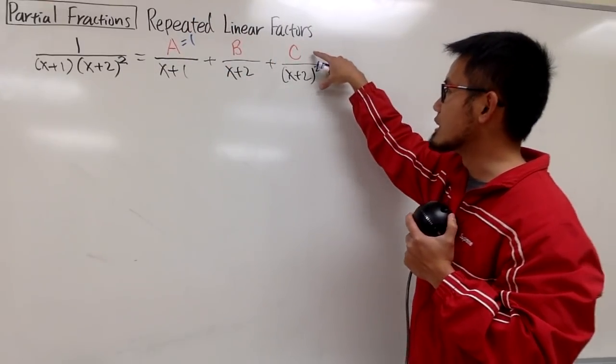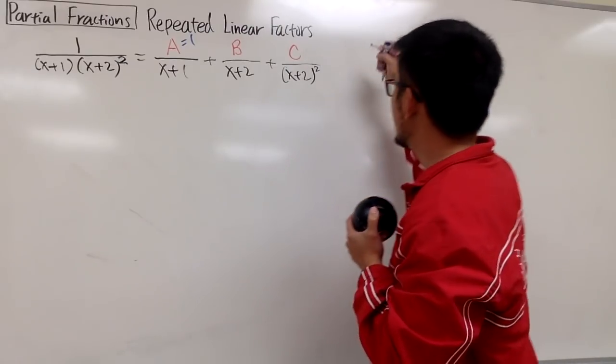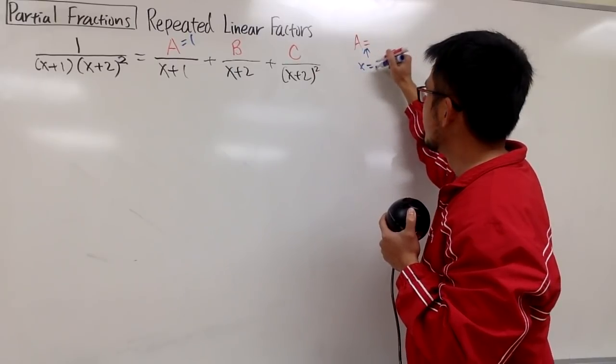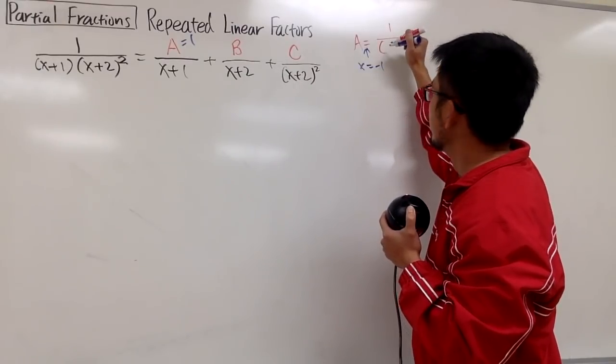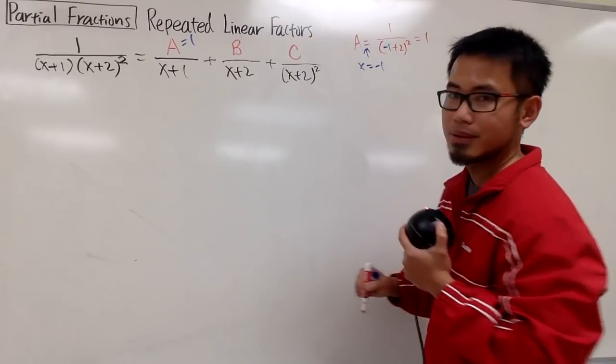And in fact, we can also do the same for c. All right? And once again, a is just because we let x equal to negative 1, and you see this is 1 over negative 1 plus 2 squared, and you end up with 1.